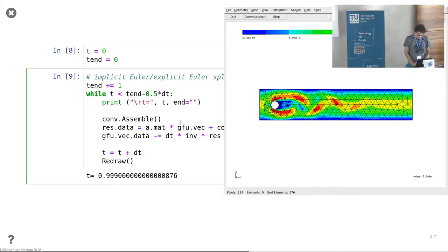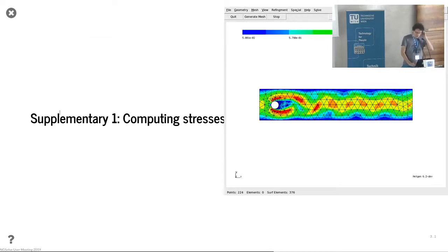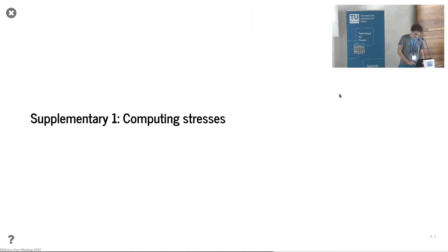Then you could compute this for a longer time to get the very nice Kármán vortex street behind this circle. Any questions? That's again a supplementary that I will skip. So you could also think about how to compute drag and lift forces around this circle. And this is explained in a little more detail in the remainder of this tutorial here.